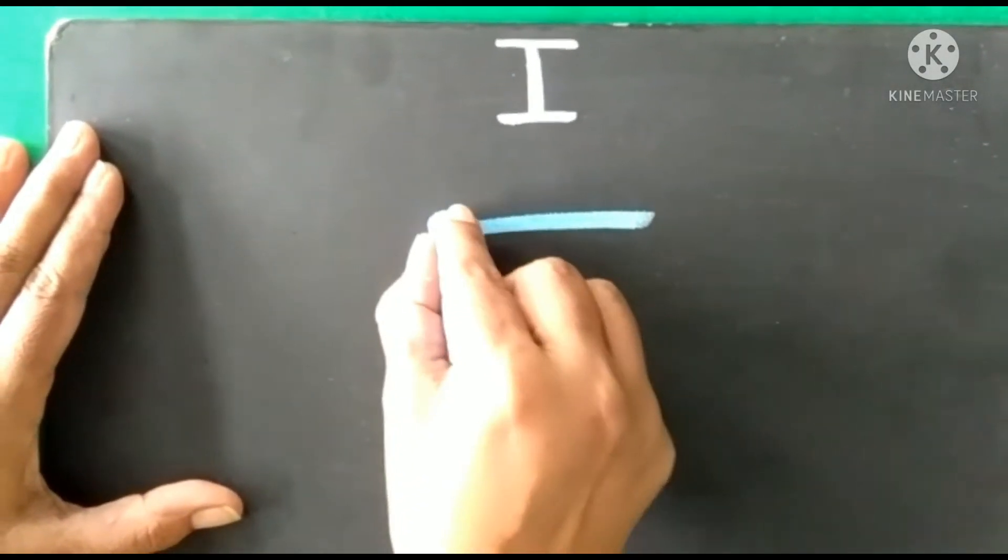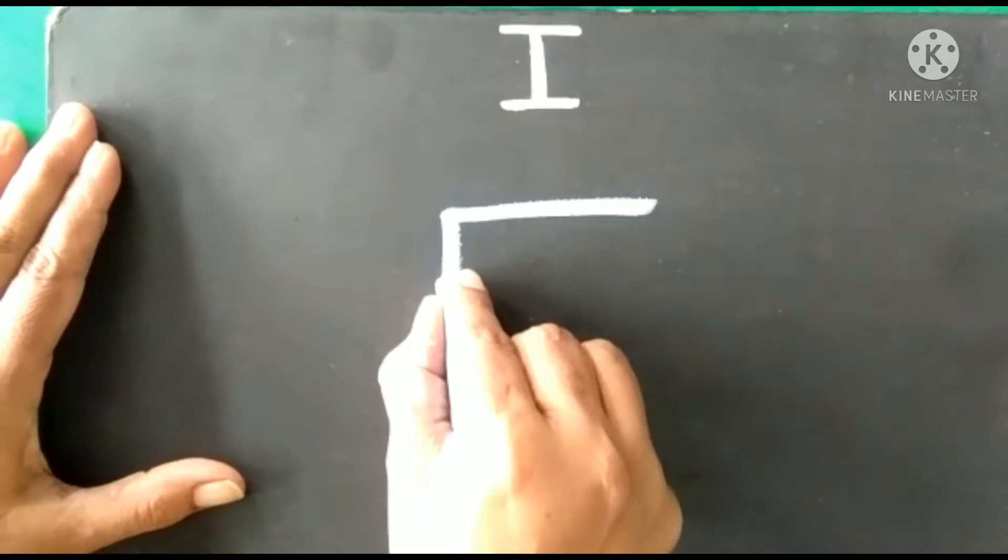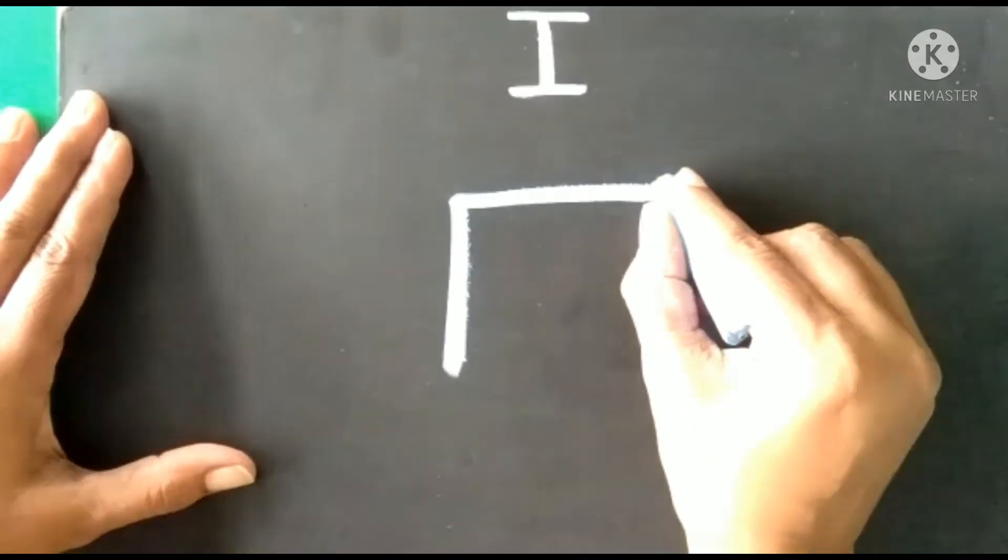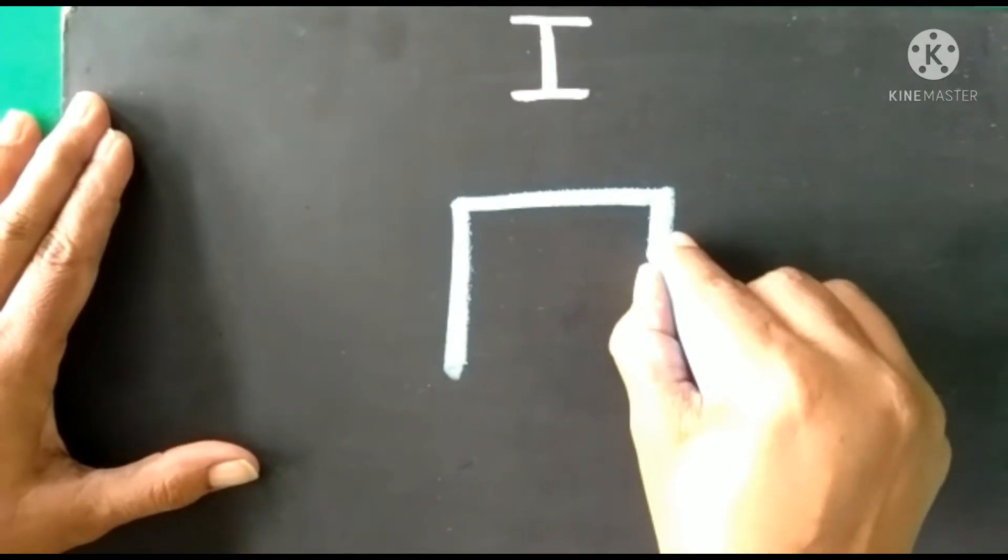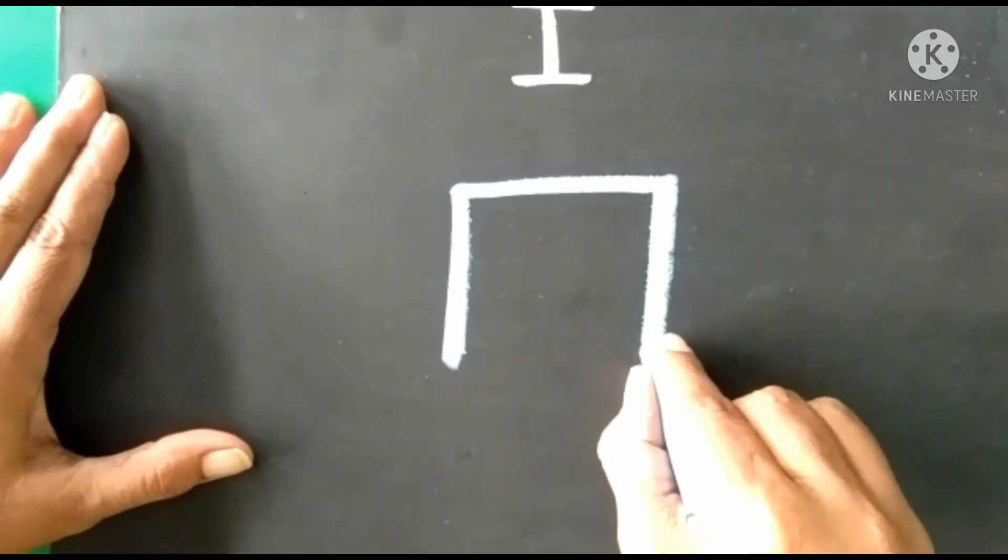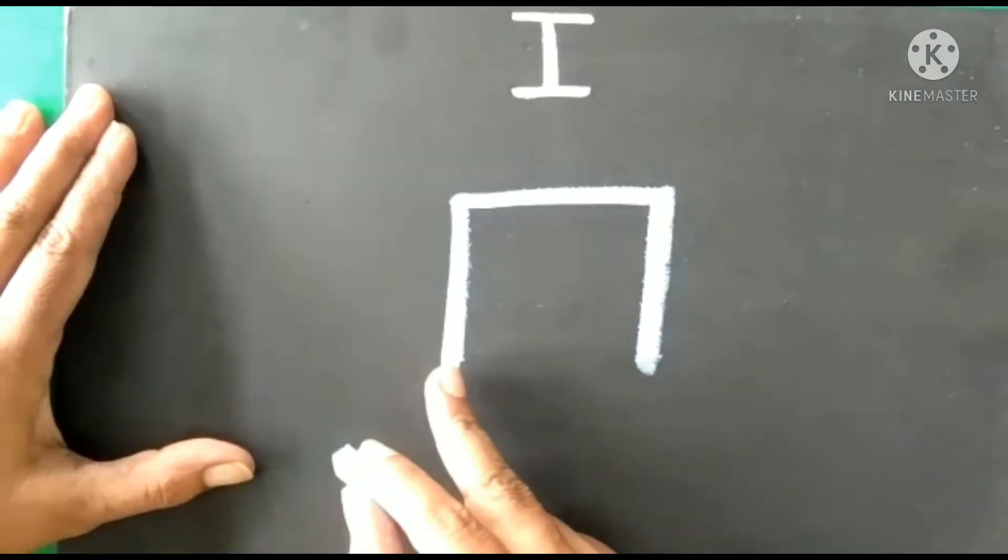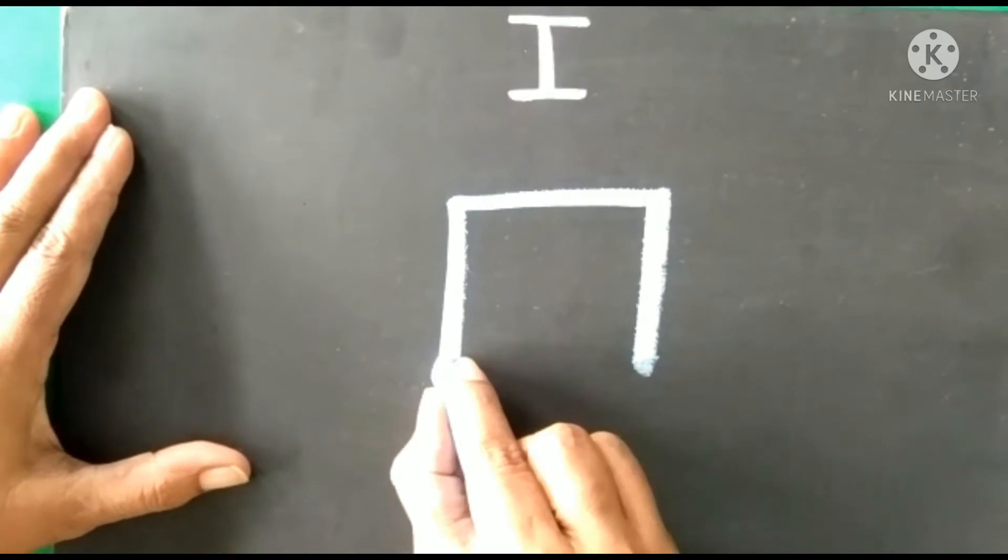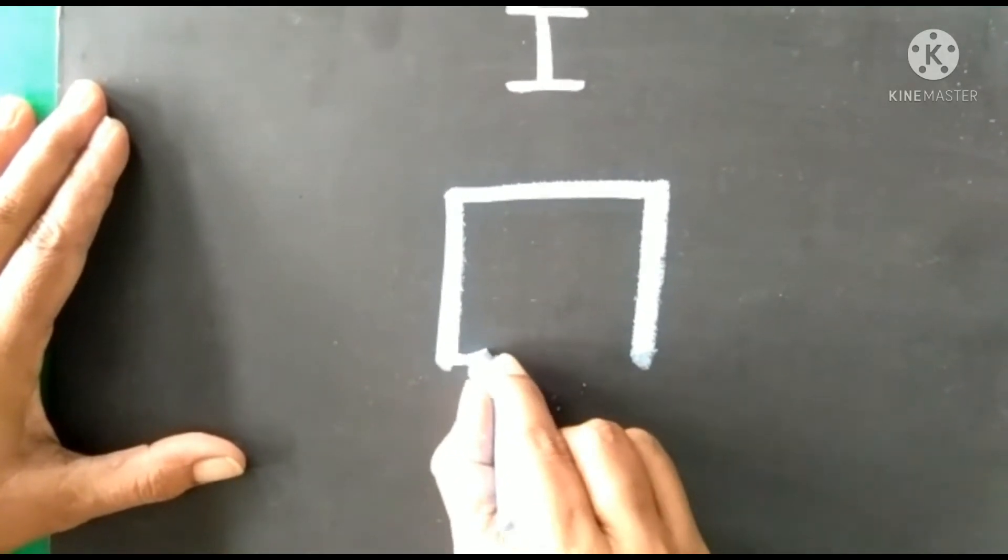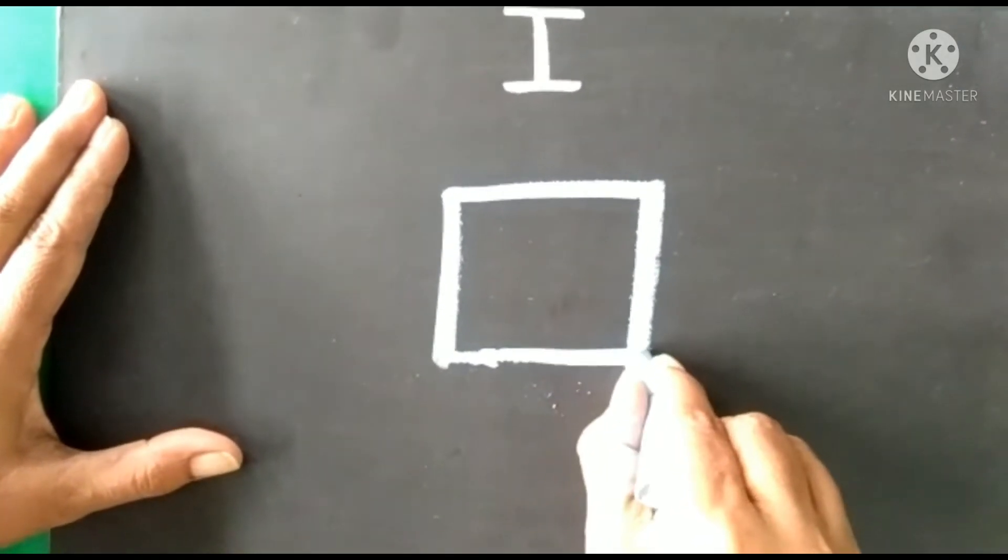Then from here we have to make one standing line. Again from here we will make one standing line. And then we have to join this standing line with the sleeping line.